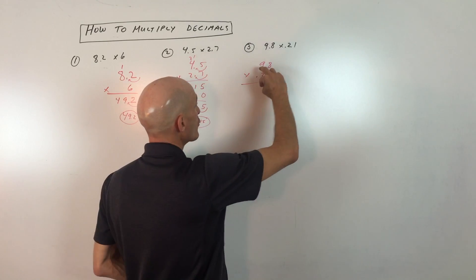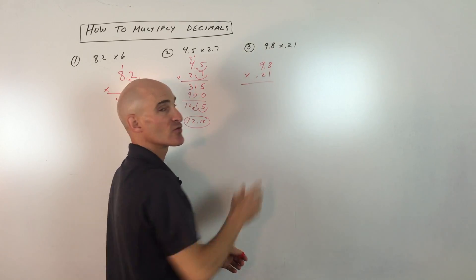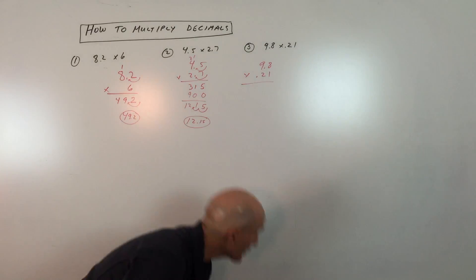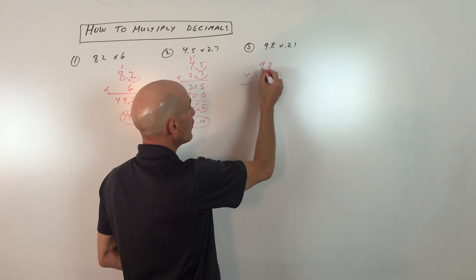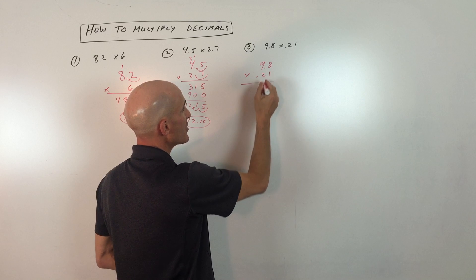It doesn't matter what order you put these in, whether you put this one here or this one here. So let's take a look at how to approach this one. We've got 1 times 8 is 8. 1 times 9 is 9. I put 0. That's the placeholder here.